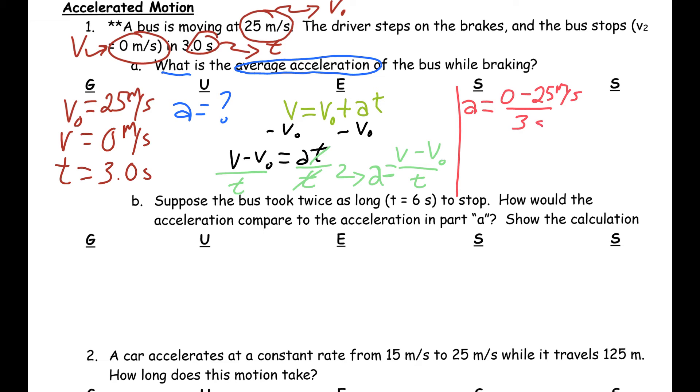Now, when I do that, I'm going to get a number like negative 25 divided by 3. And so, that gives me a final answer, if I divided this correctly, of 8.3 meters per second squared. And that is how you do part A.